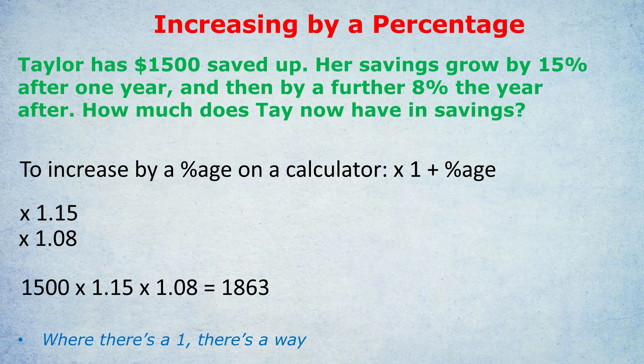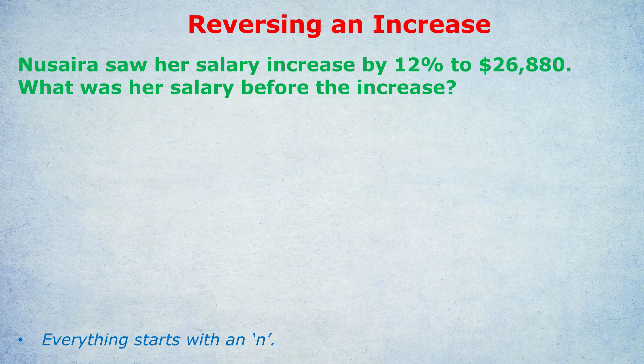The next example is what I really wanted to emphasize — reversing that increase. This is the example that many people struggle with. Lucira saw her salary increase by 12% to $26,880. What was her salary before the increase? We have an original unknown amount that was increased by 12% to reach 26,880. Importantly, what we don't do is find 12% of 26,880 and then take that away — that's definitely wrong.